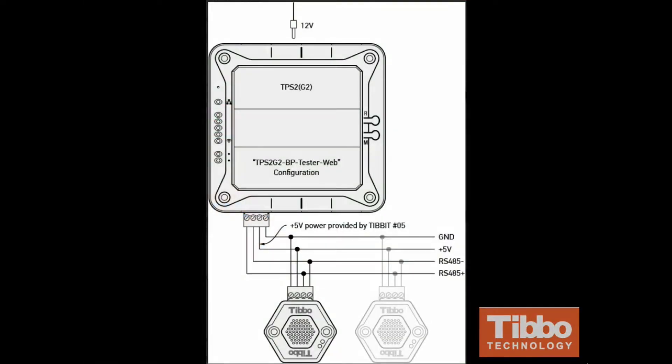Setting up the bus probe sensors is very easy. Get your TPS2, preferably a Gen2 model with display and touch keypad. Connect your bus probe to Tibo 5, which provides the RX and TX lines. You will also need a power source and ground for the bus probes.